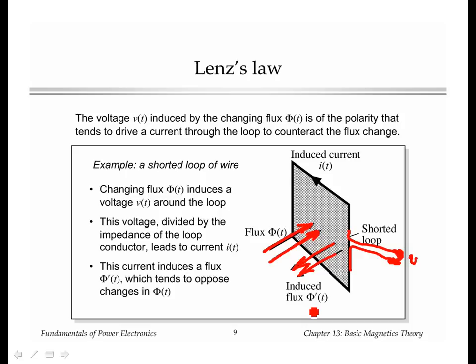Effectively, what happens is that the voltage that was induced now with a shorted loop causes a voltage drop across the impedance of the conductor around the loop in its resistance and its inductance. That leads to a current of the proper magnitude to counteract the change in flux.